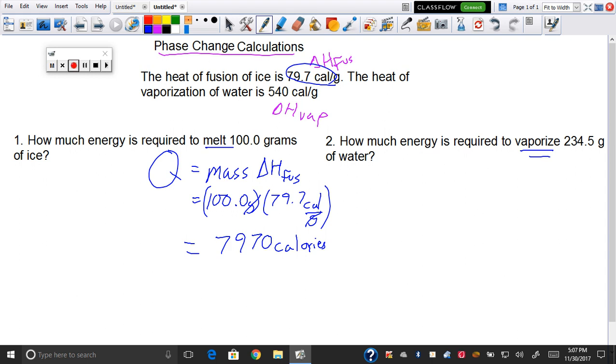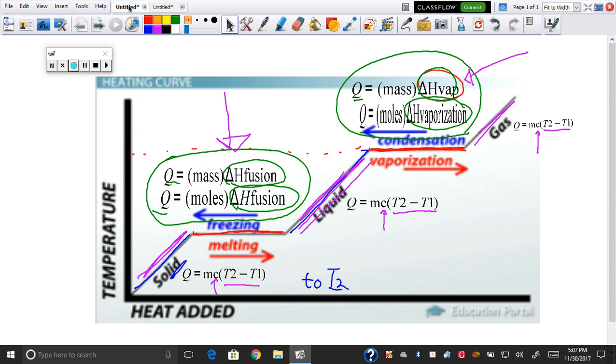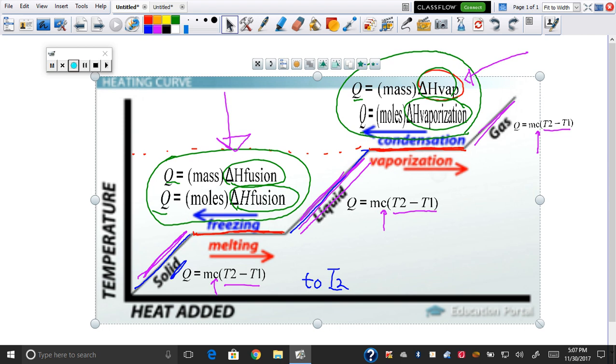The heat of vaporization of water is 540 calories per gram. What equation am I going to use? Am I going to use Q equals m times c times T2 minus T1? No, I'm vaporizing it, so I'm going to use Q equals m times delta H of vaporization.